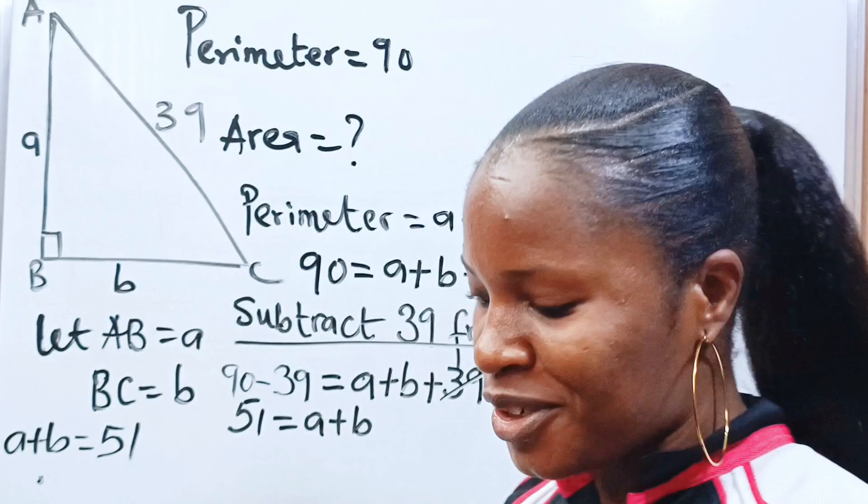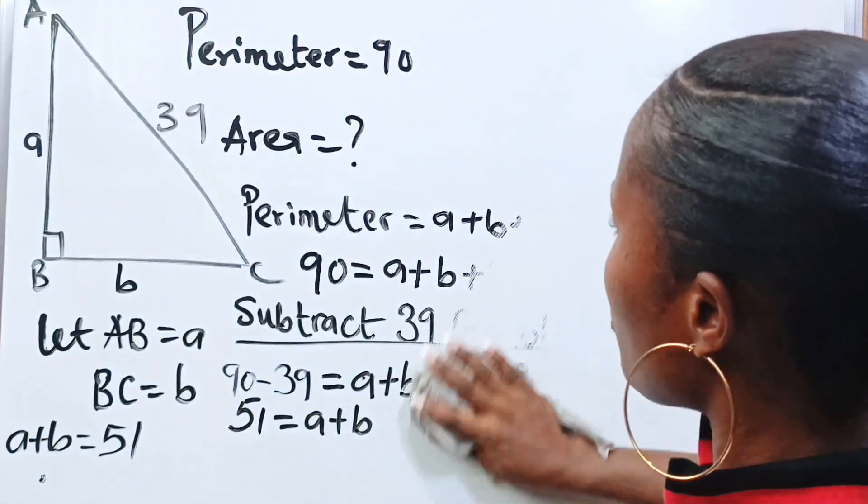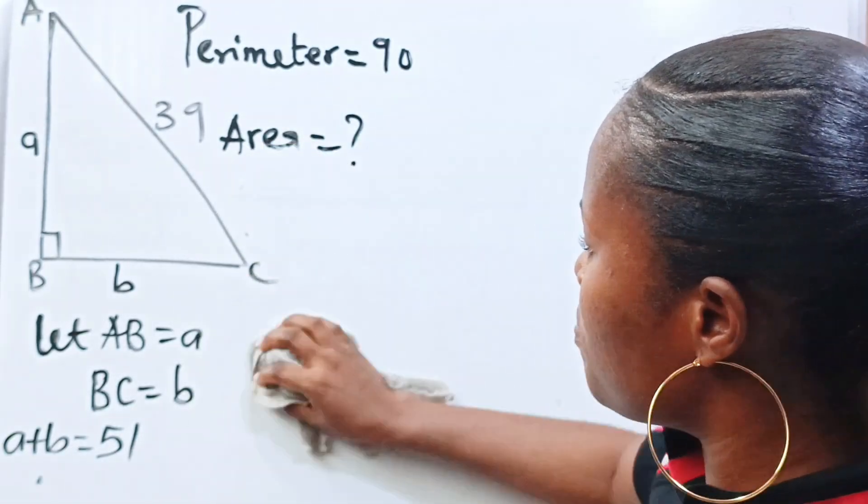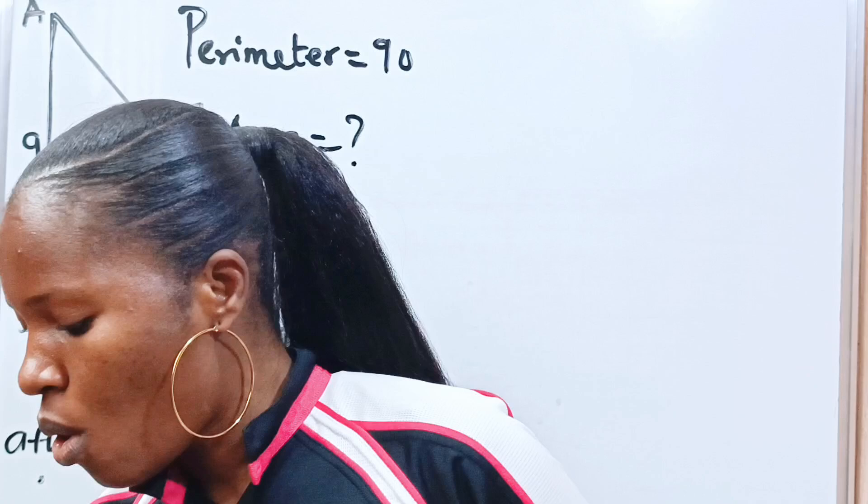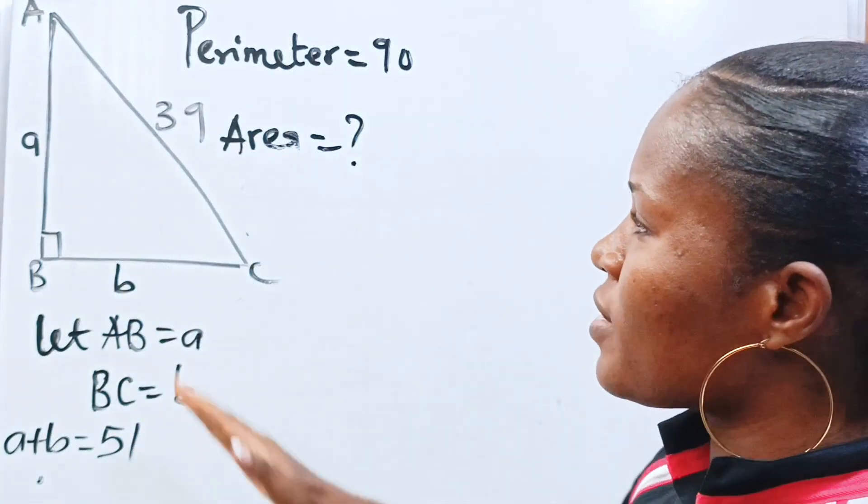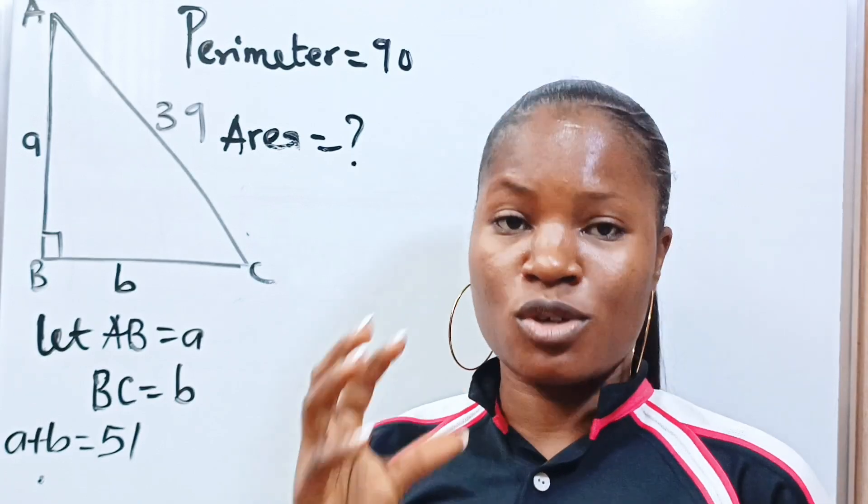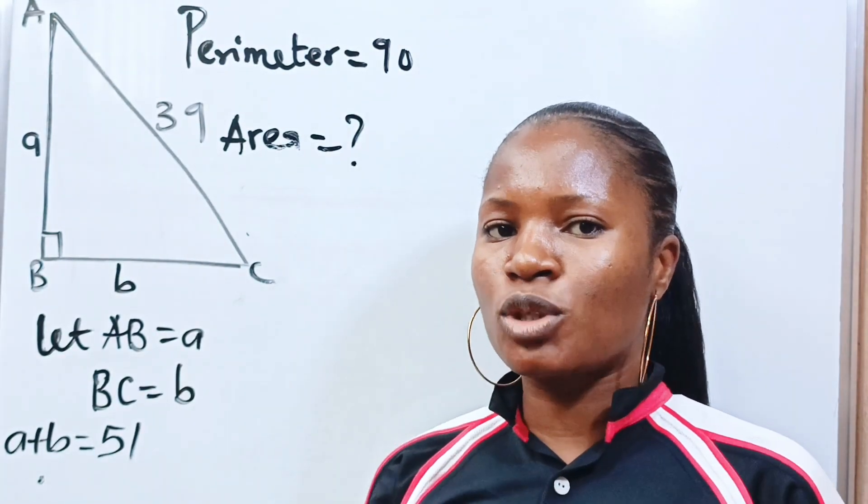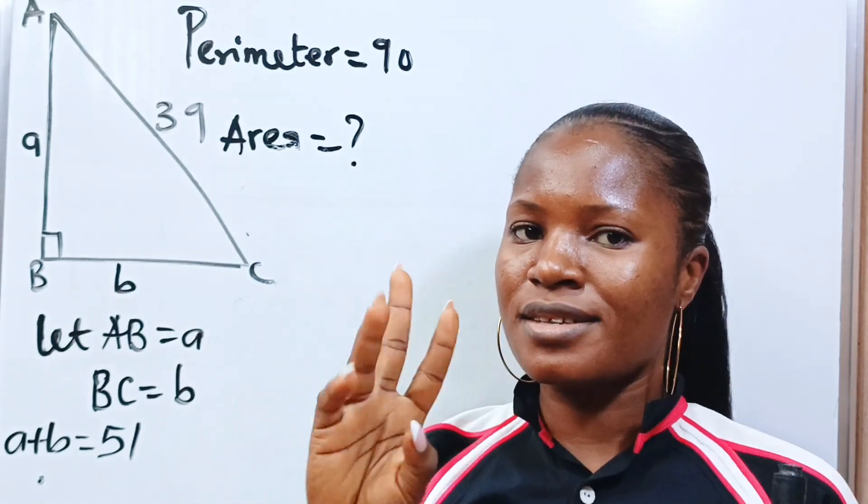Now let's go back to this and try to find the area. So we have gotten the value of A plus B. Now let us read the mind of the examiner again. Why did the examiner give us the hypotenuse? And why is this triangle a right angled triangle?